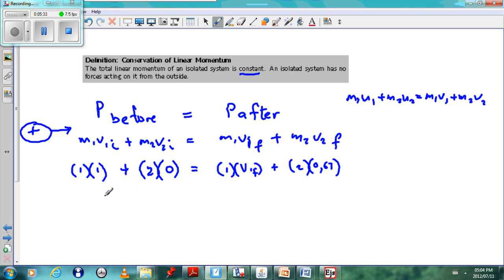So here, 1 times 1 is 1 plus 0 equals V1 final plus 2 times 0.67, which gives us 1.34. If we take it onto the other side, it becomes minus 1.34 plus 1. We can see that V1 final, the velocity of the blue car final, will be minus 0.34 meters per second.